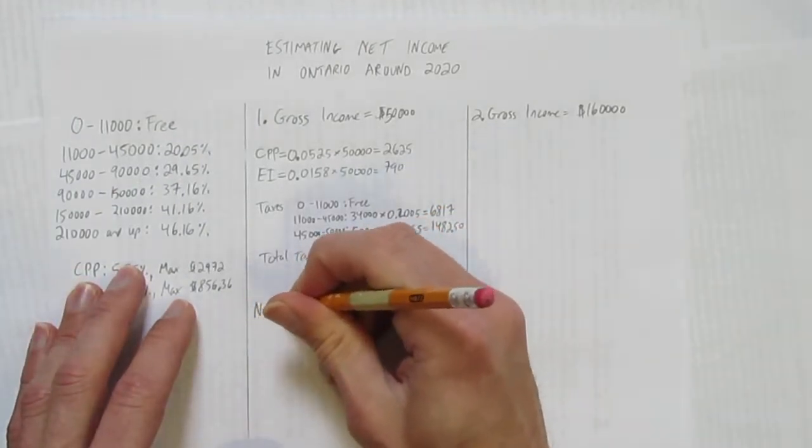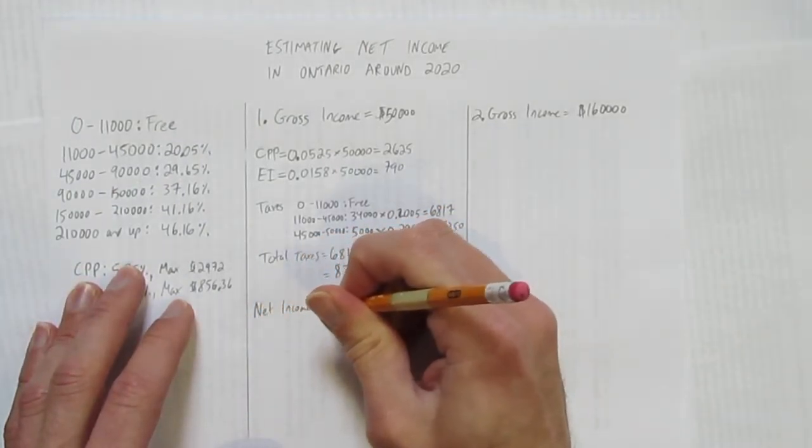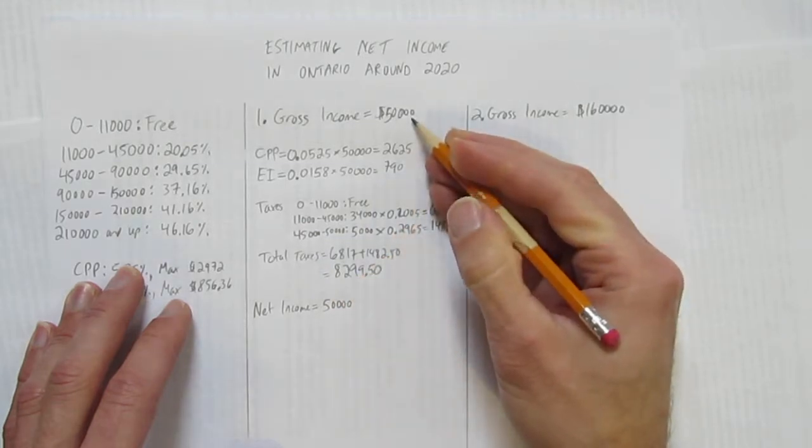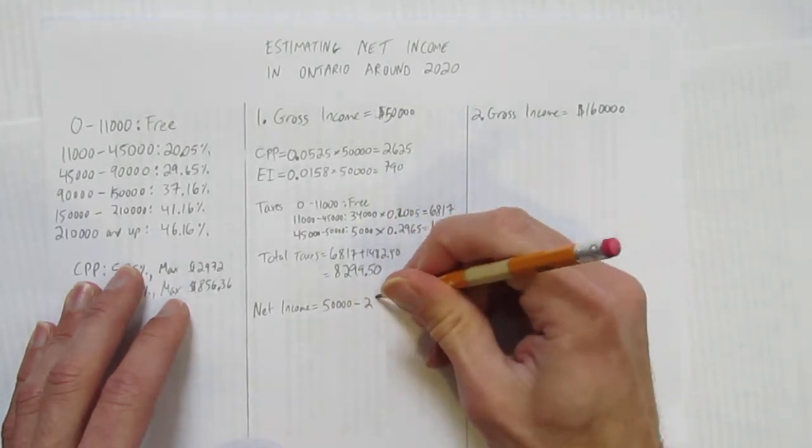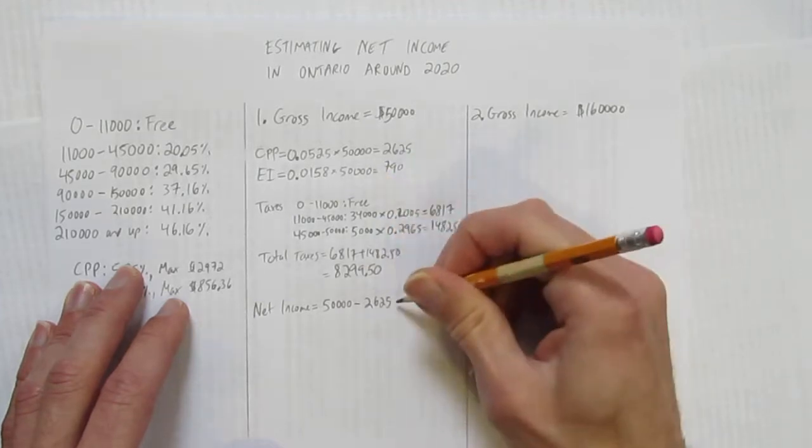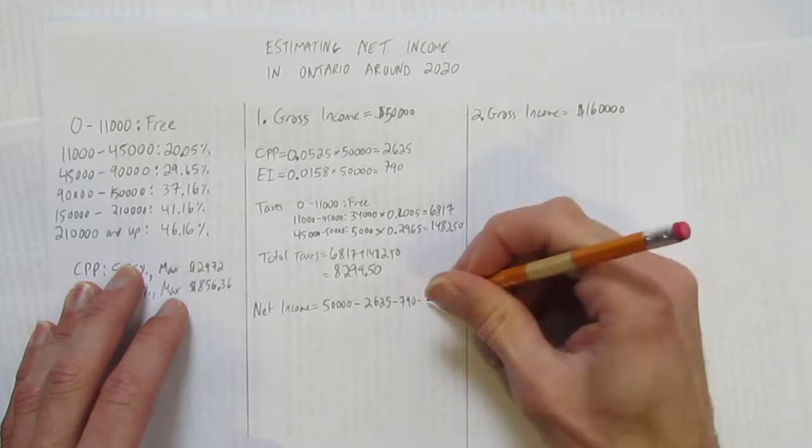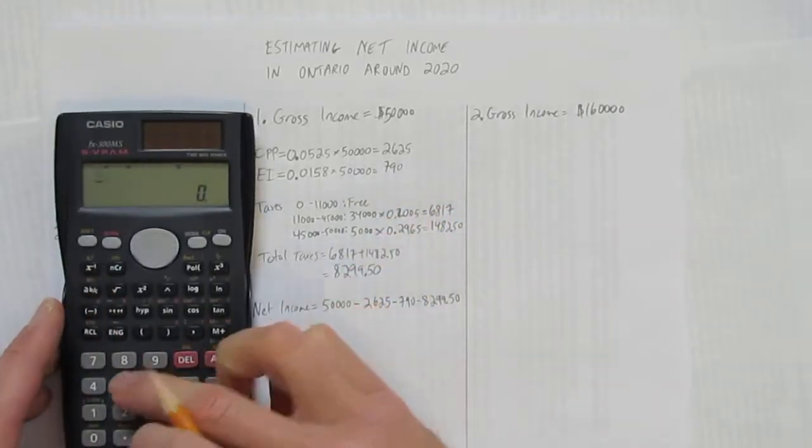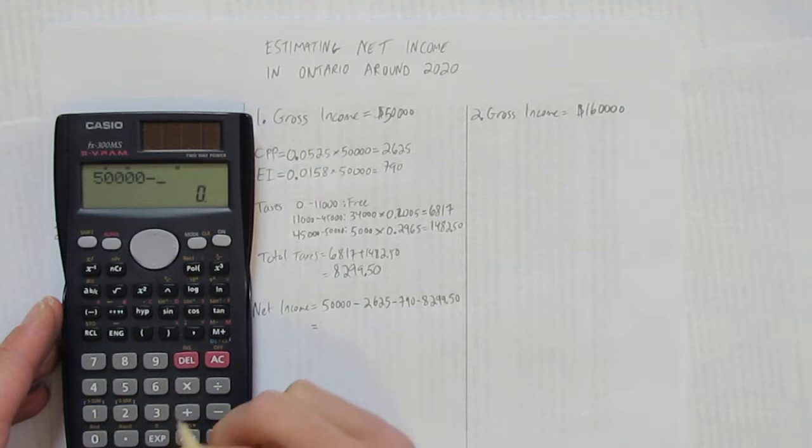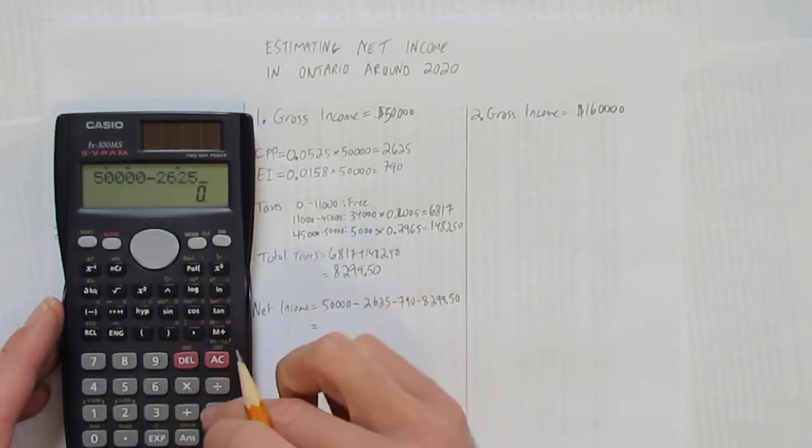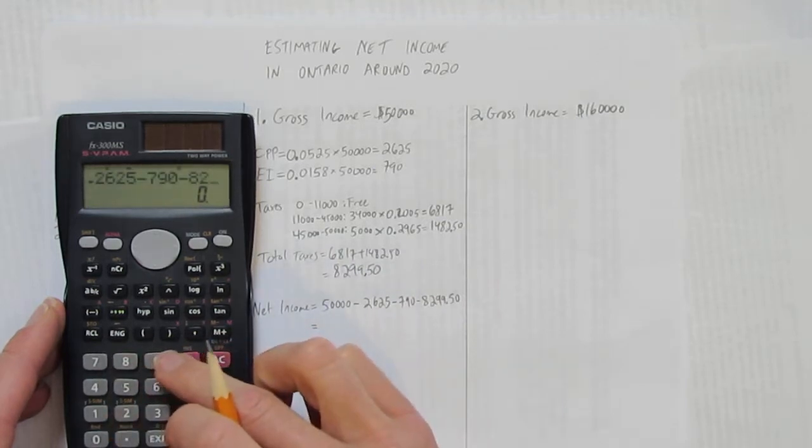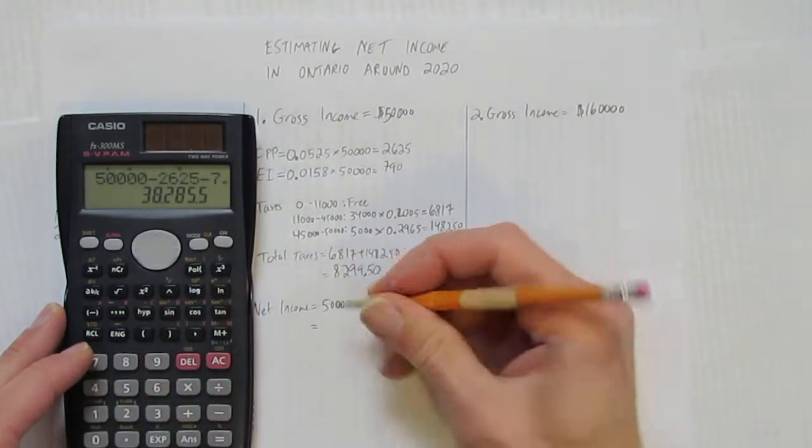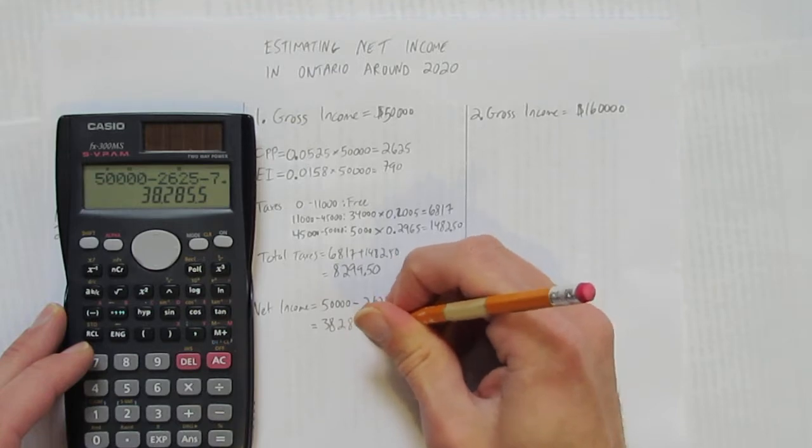So now we can figure out our net income. Your net income is your gross income minus your deductions. So it's going to be $50,000. That was your salary for the year. Take away your CPP. Take away your EI. And take away your total taxes. Let's see what we got. This will be it.